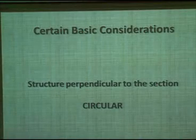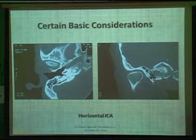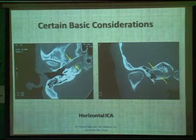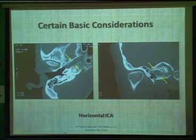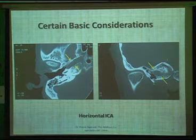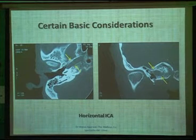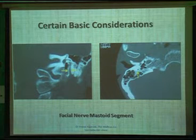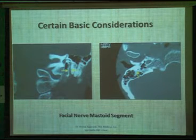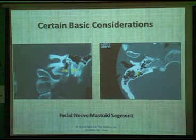Any structure that is parallel to the section will appear in its entirety or as a tubular structure, whereas any structure perpendicular to the axis of the scan will appear circular. For example, the horizontal internal carotid artery, housed in the petrous temporal bone, is parallel to the axial scan and hence appears in its entirety on the axial view, whereas on the coronal section it appears circular because it runs perpendicular to that axis. Similarly, the vertical part of the facial nerve — the mastoid segment — appears in its entirety on the coronal section but becomes circular on the axial scan.